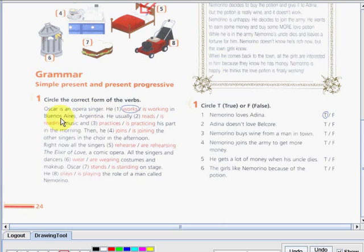He usually blank music. So, what's the answer? Very good. What's the answer? Very good. So, he joins the other singer in the choir in the afternoon. Okay. So, right now, all the singer very good are rehearsing, right? Because it's present progressive.